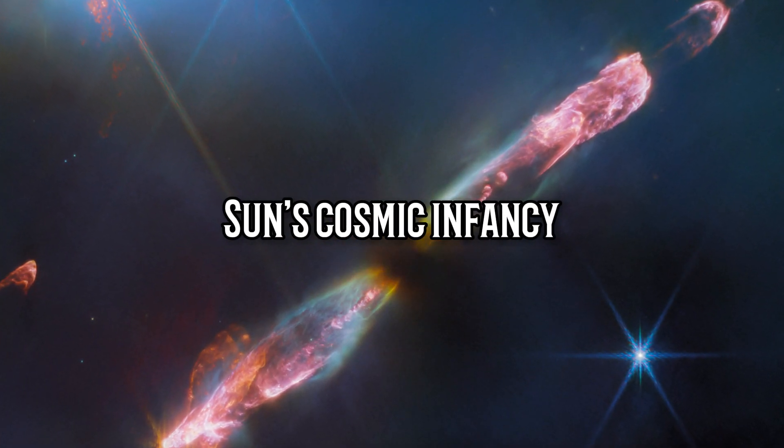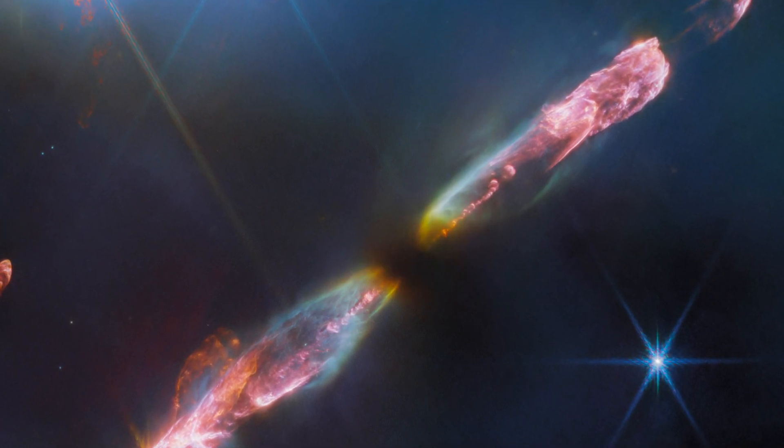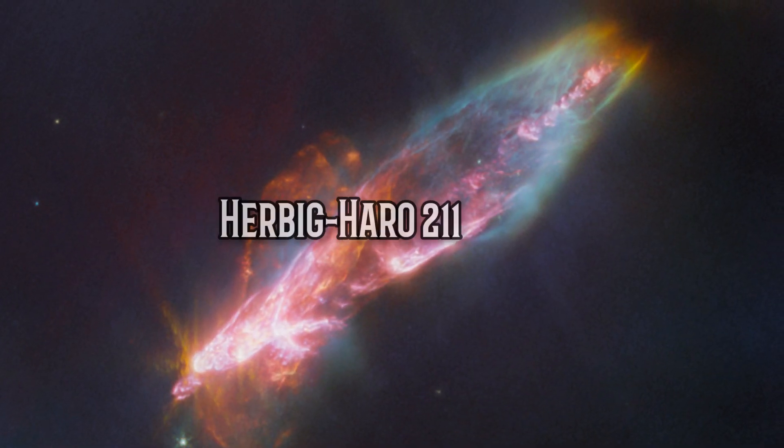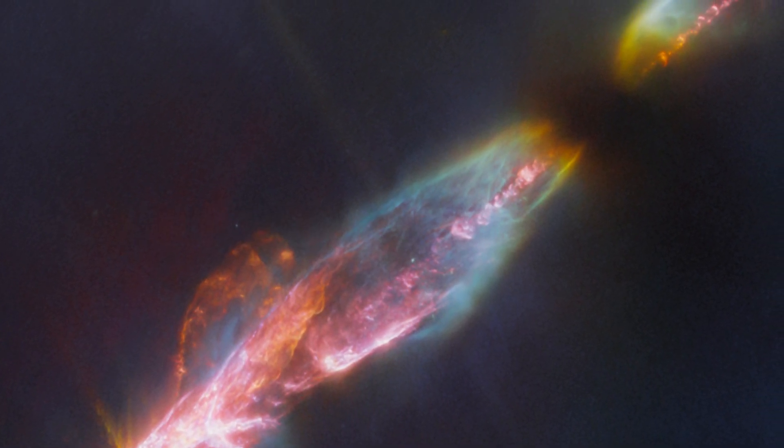NASA's James Webb Space Telescope has captured a stunning image of a young star that resembles our sun in its infancy. The star is called Herbig Haro 211, and it belongs to a class of protostars that are the earliest stage of star formation.